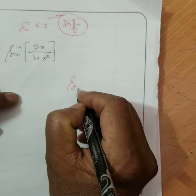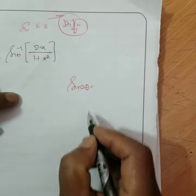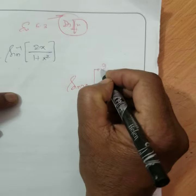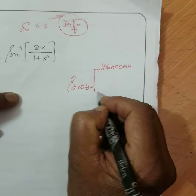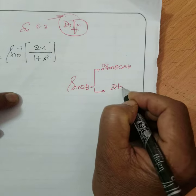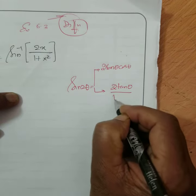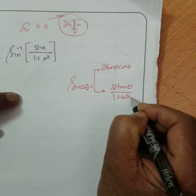Now there is one formula: sin 2θ is equal to 2 sin θ cos θ, or also another thing, 2 tan θ over 1 plus tan squared θ.